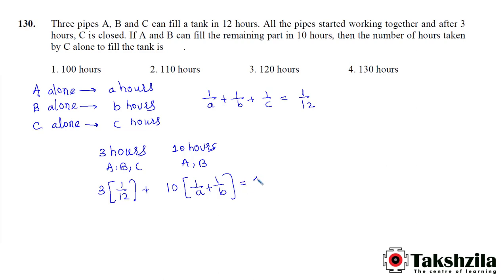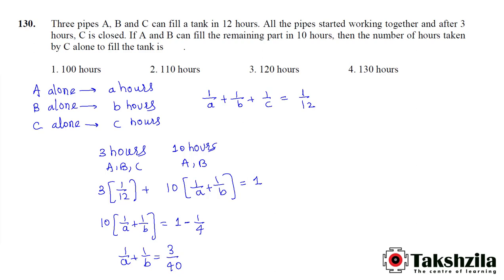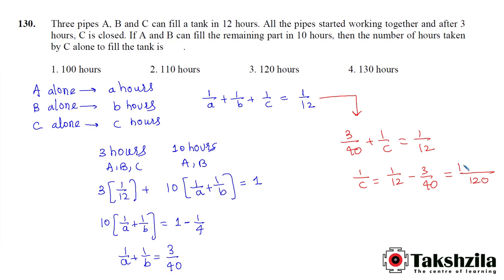The tank is filled, so total work done is 1. Therefore 10 × (1/A + 1/B) = 1 − 3×(1/12) = 1 − 1/4 = 3/4. So 1/A + 1/B = 3/40. Substituting into the combined equation: 3/40 + 1/C = 1/12. Therefore 1/C = 1/12 − 3/40. The LCM is 120, giving 10 − 9 = 1. So 1/C = 1/120, meaning C = 120. Pipe C alone takes 120 hours — option number 3.